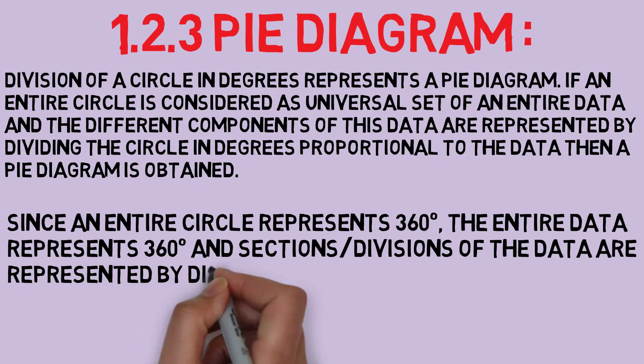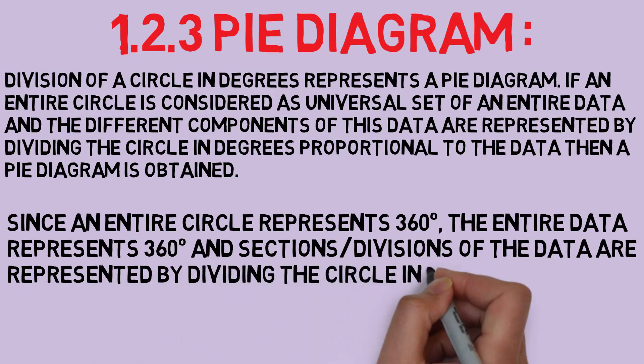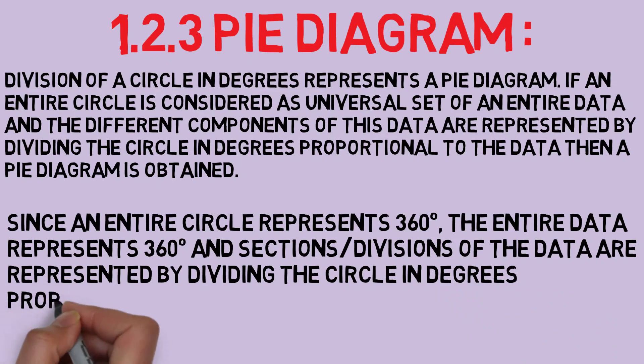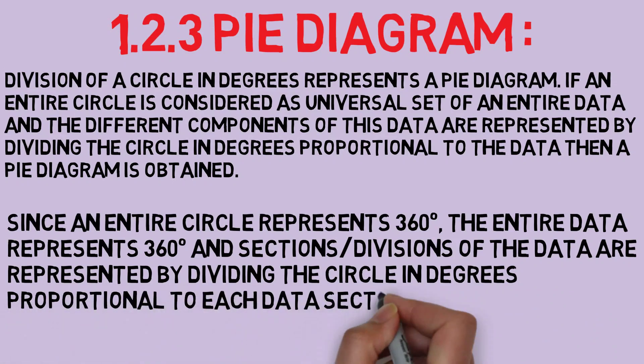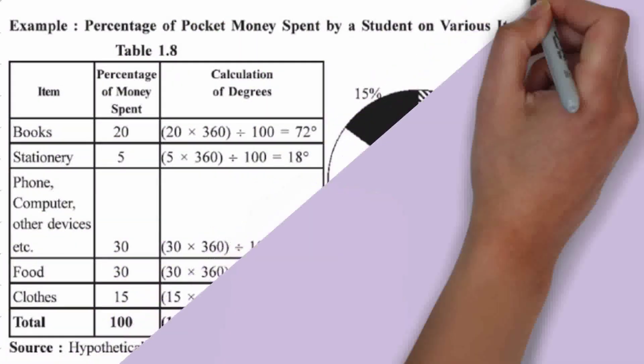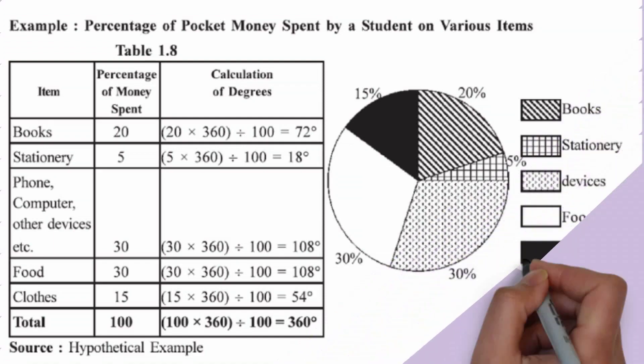Formula for obtaining a proportionate degree for a component of data: degree equals component value upon total value into 360. Example of pie diagram and its calculation is given below.